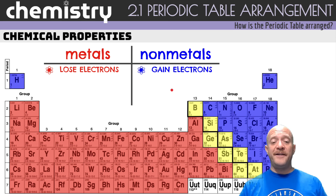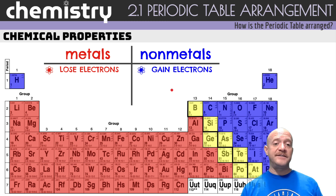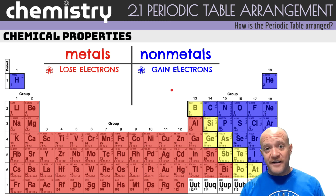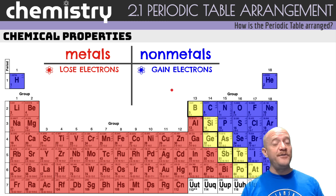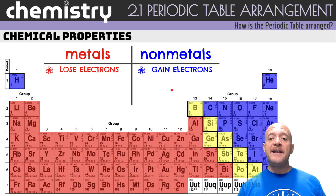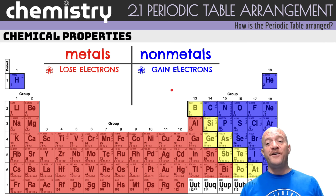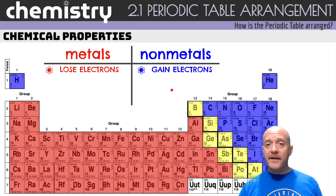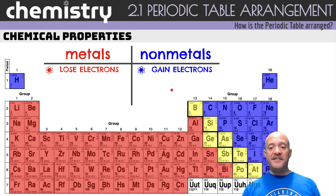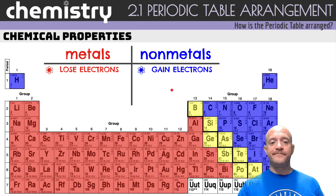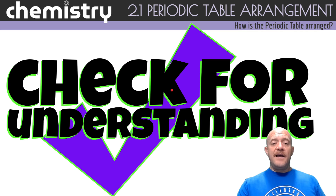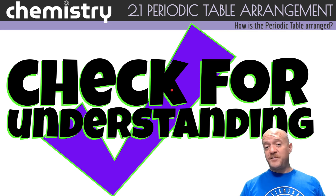The chemical properties of metals and nonmetals are based on what happens with their electrons. Metals lose electrons — specifically their valence electrons. Nonmetals gain electrons because they want to fill their outer shell. Both metals and nonmetals are trying to reach the magic number of eight with their octet.